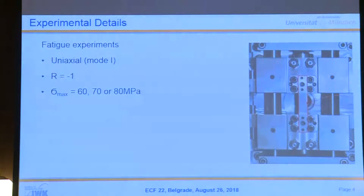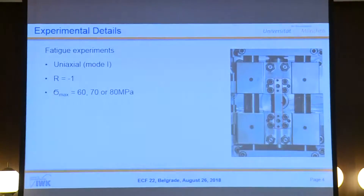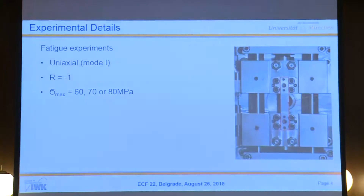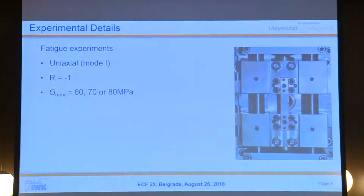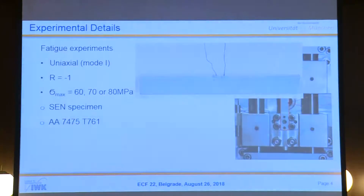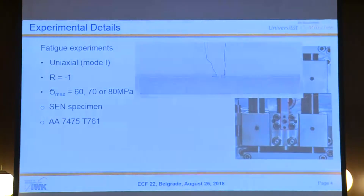This is the setup. We have a hydraulic machine for fatigue experiments with only a uniaxial load. The R value is minus one, so we have a fully reversed load. The maximum stress is alternatively 60, 70, or 80 MPa. The specimen is a SEM specimen with a U-shaped notch, and you can see the wires for the DC potential method directed on the surface.